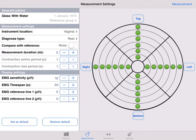Chapter 5: Measurement. We are now ready to start a rest measurement with no comparison to the reference group. To show you the principle, we use our dummy patient glass with water.